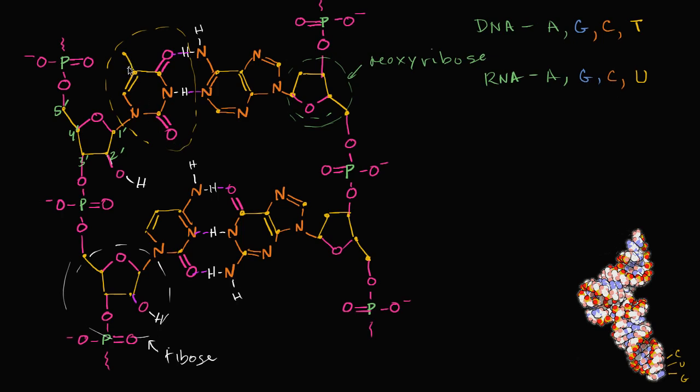If I want to turn it into uracil, I just have to get rid of this methyl group right over here. If I replace it with a hydrogen, now I'm dealing with uracil. You see that uracil and thymine are very similar nitrogenous bases, and that's why they can play a very similar role. Uracil pairs with adenine, the same thing that thymine pairs with.